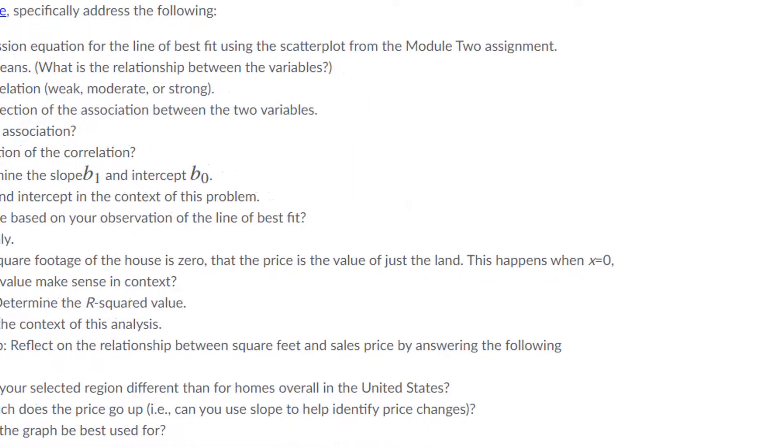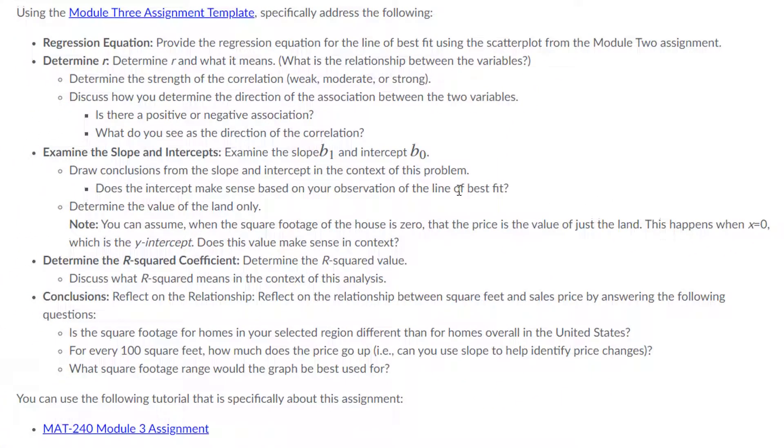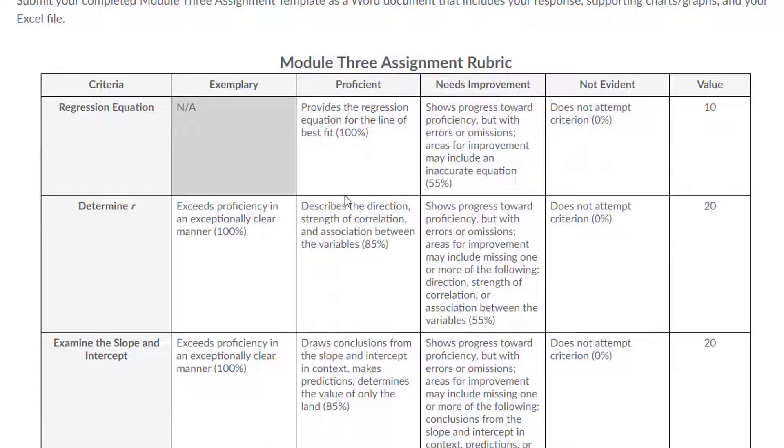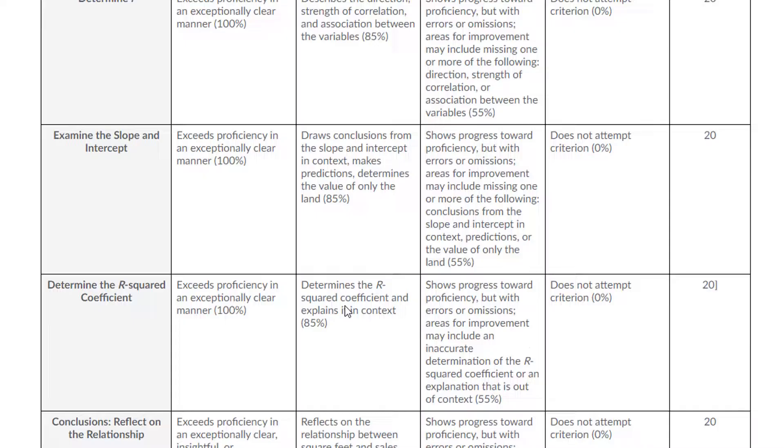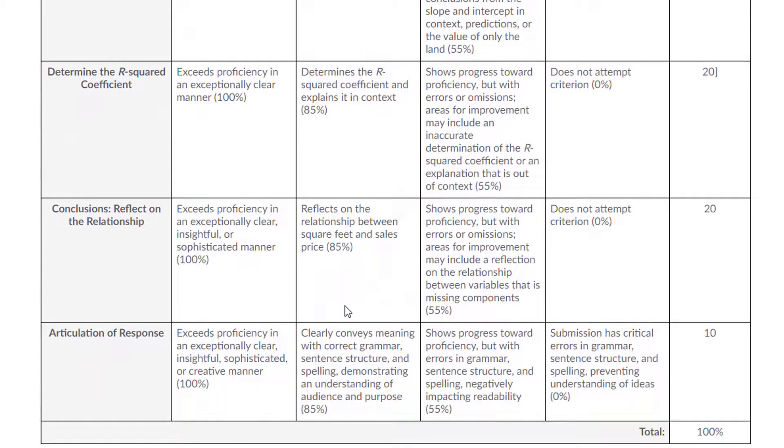Again, use the template and remove all the bracketed text and go through the rubric, one category by category, and make sure that you've done everything that you're asked for. And then you will get 100 percent. And I hope you do. That's everything for this assignment.